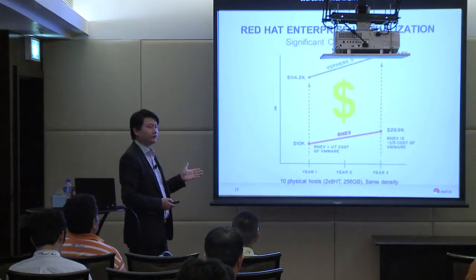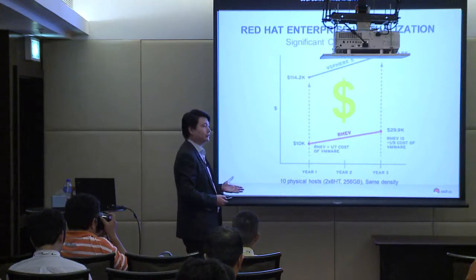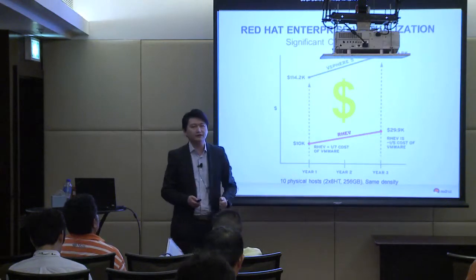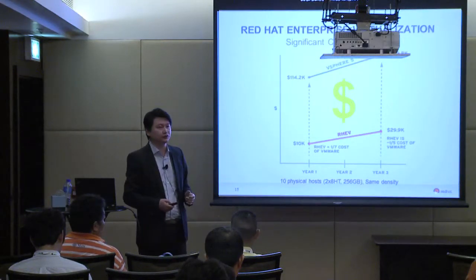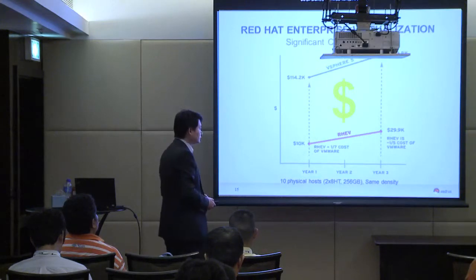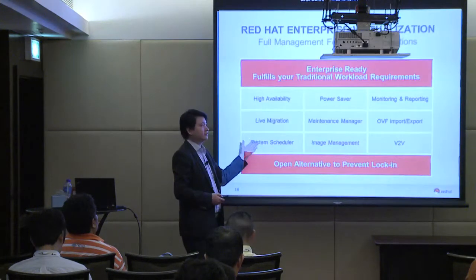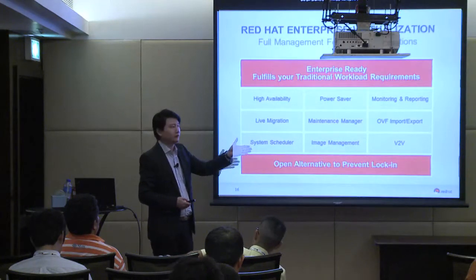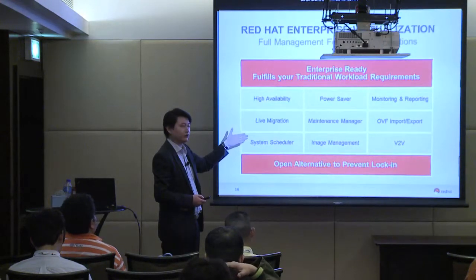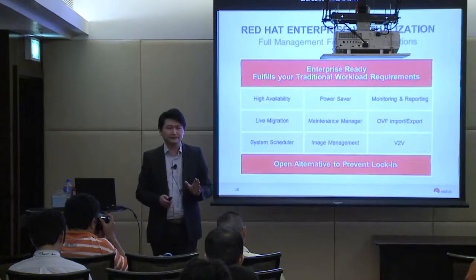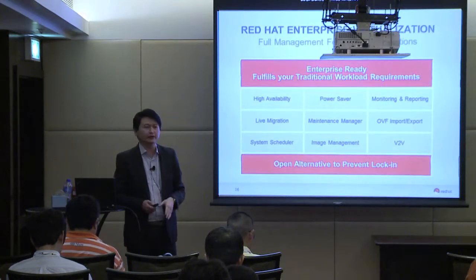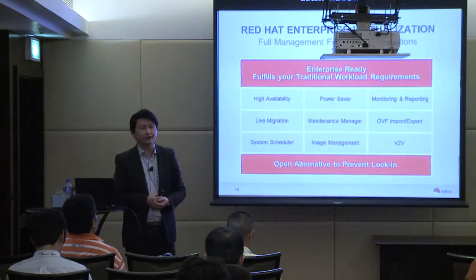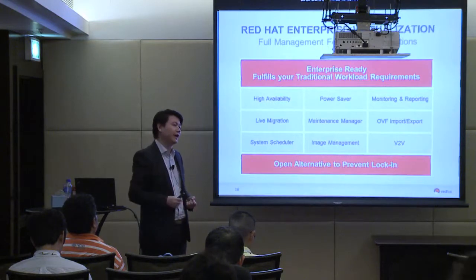In terms of performance, we claim top six performance on a six-socket score from the SPEC virt benchmark — you can search spec.org to see the detailed benchmark. In terms of cost, open source brings a lot of benefit. Compared with proprietary solutions, we have around two-fifths of the cost over three years. It is a very good starting point to move from a proprietary virtualization model to an open alternative.